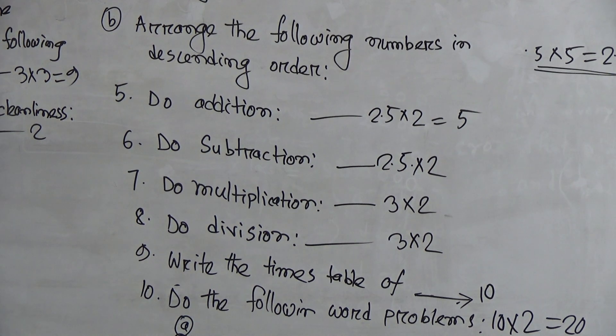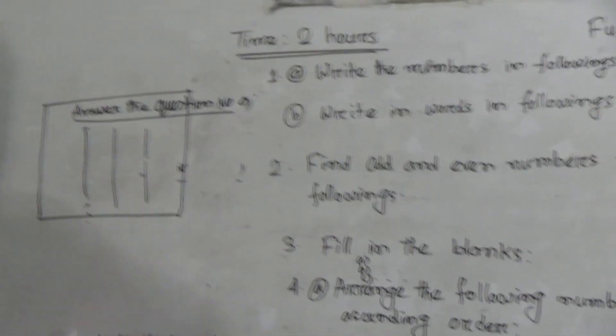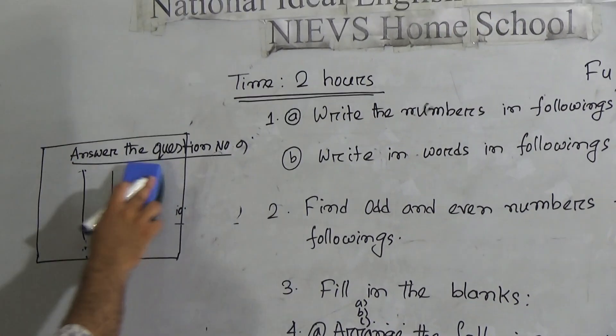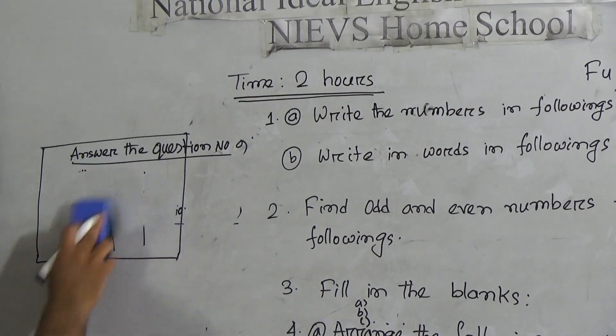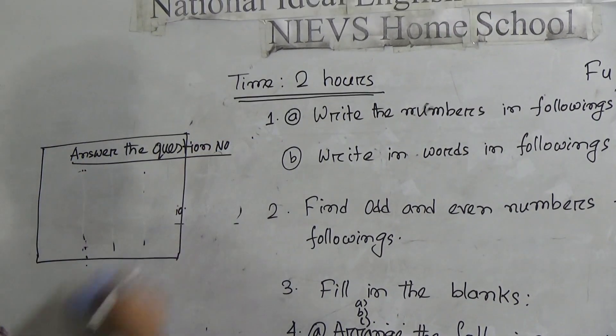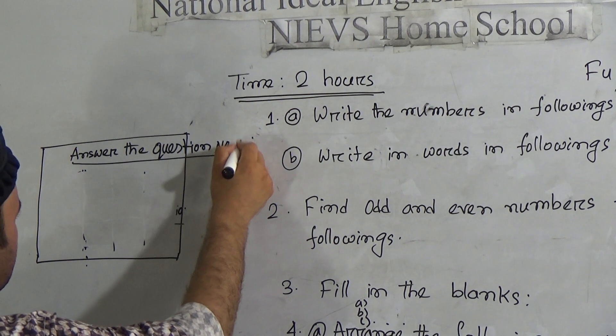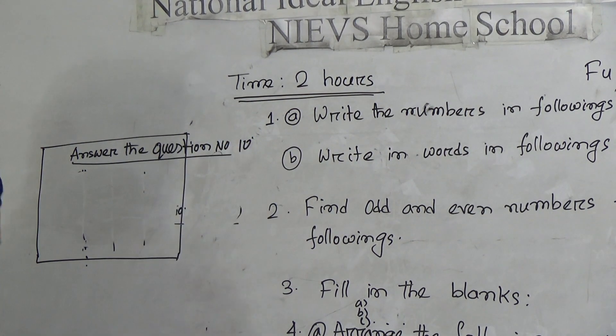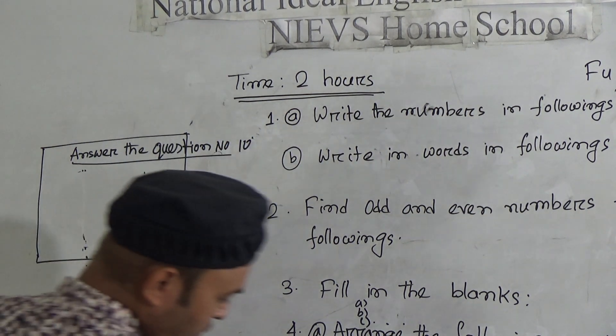Question number nine: write the times table. Similarly, write the answer to question number nine in your answer script. Write the times table here. After finishing the times table, go to question number ten.